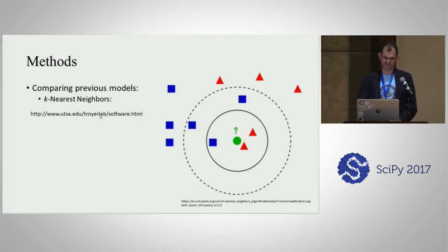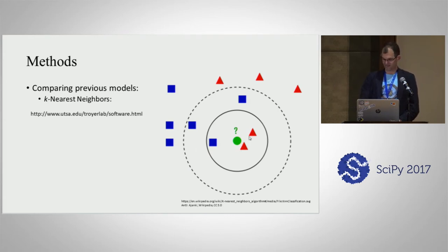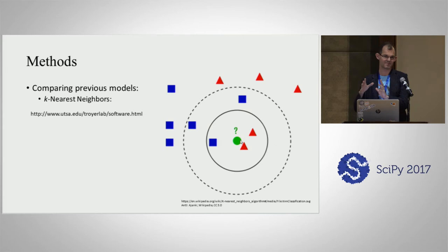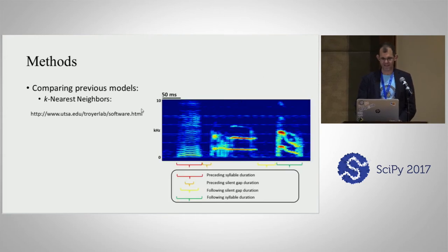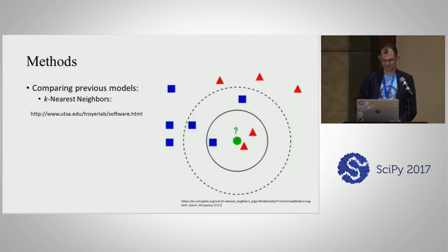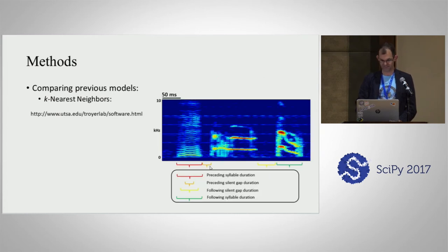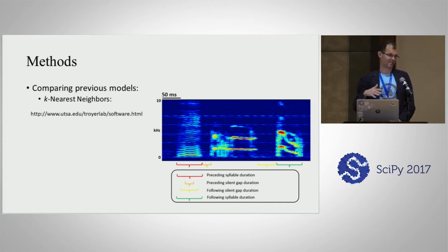K-nearest neighbors is one example: the Troyer lab at UT San Antonio has their whole software package online. The way KNN works is, if you have a new data point and you want to assign a label, you take a vote of its nearest neighbors and whoever's in the majority wins. The secret sauce in my KNN are the features: using the duration of the preceding and following syllables makes it a very competitive algorithm — think of this as a poor man's hidden Markov model.